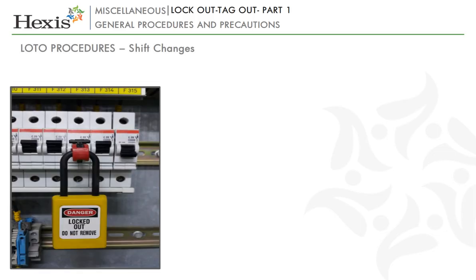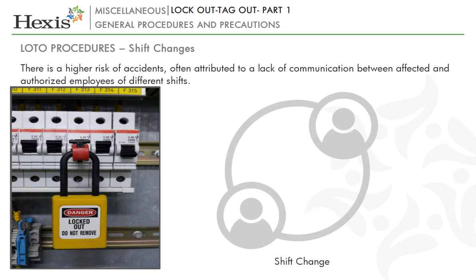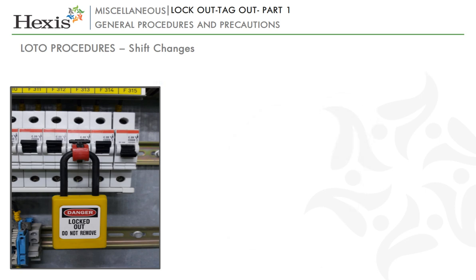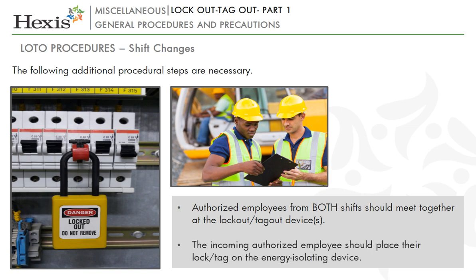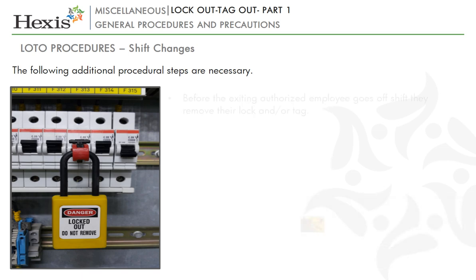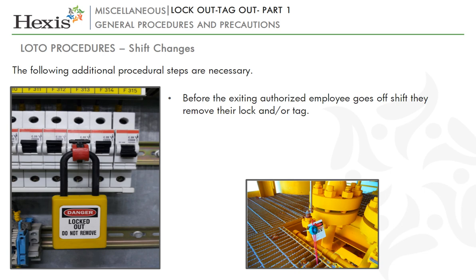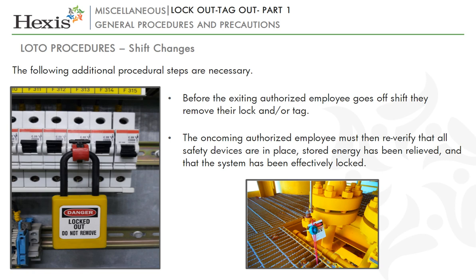Let us now see what steps to follow if the LOTO extends beyond one shift. When a LOTO extends beyond one shift, there is a higher risk of accidents, often attributed to a lack of communication between affected and authorized employees of different shifts. Therefore, the following additional procedural steps are necessary. Step 9: Authorized employees from both shifts should meet together at the lockout-tagout device. Step 10: The incoming authorized employee should place their lock or tag on the energy isolating device before the exiting authorized employee going off shift removes their lock or tag. Step 11: The oncoming authorized employee must then re-verify that all safety devices such as blocking are in place. Step 12: Stored energy has been relieved and that the system has been effectively locked. Incoming affected employees should also be alerted.